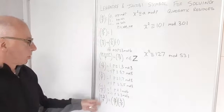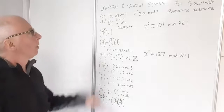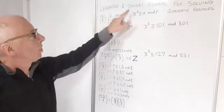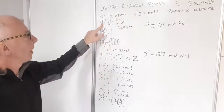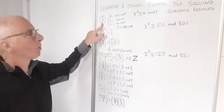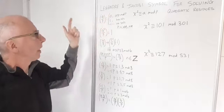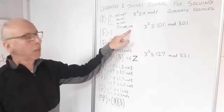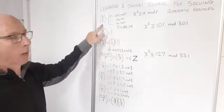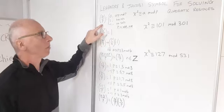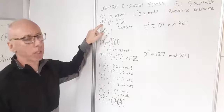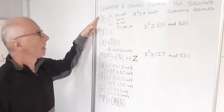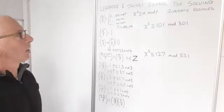Here is my list of rules I can use when working with Legendre and Jacobi symbols. Jacobi symbols apply when the number at the bottom is not prime, and Legendre when it is prime. The bottom must be odd and positive — no even numbers, no negative numbers. The top can have negative numbers, and that's fully legitimate.